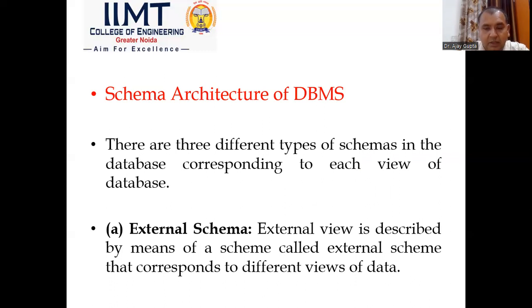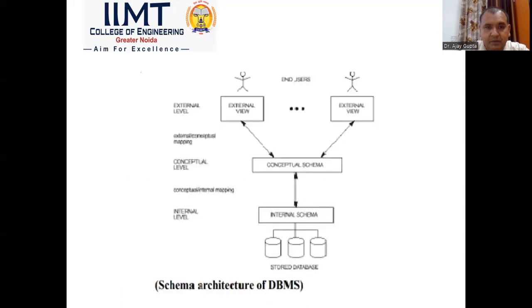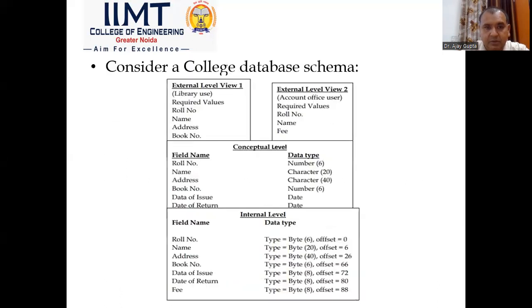So here we have discussed two types of architecture of DBMS. First is application architecture — which includes two-tier architecture and three-tier architecture. Second is schema architecture of DBMS — which includes external schema, conceptual schema, and internal schema, discussed with examples.